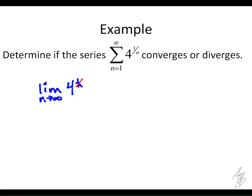Since 1 over n goes to 0, we get 4 to the 0, which approaches 1. Since the limit of the terms approaches 1 — which is not 0 — therefore the series diverges.